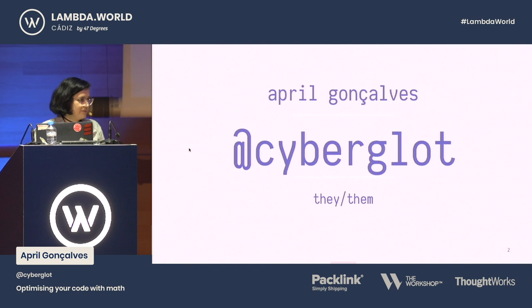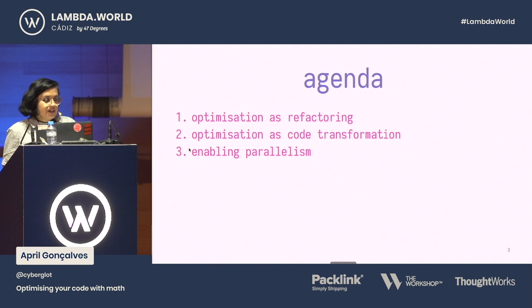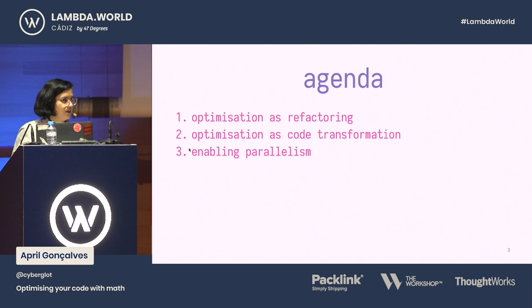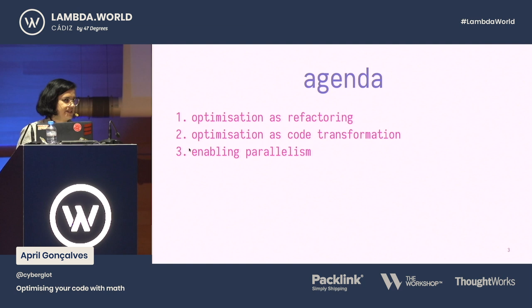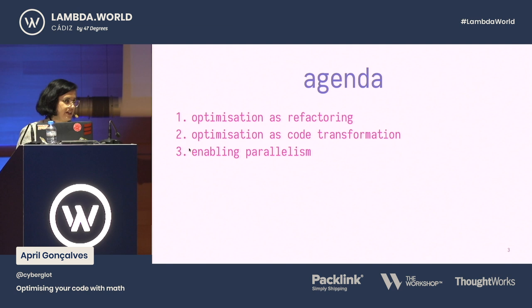I'm April. I'm on the internet as 'cyber a lot' almost everywhere, except for Medium — someone stole my handle. The agenda for today is to talk about optimizations as refactoring, where we can use math to rewrite our code to a more efficient version. We also want to talk about optimizations as code transformations made by a third party, like the compiler or a library or an embedded DSL. And at the end, we talk about how these optimizations enable parallelism.